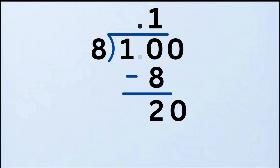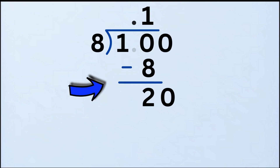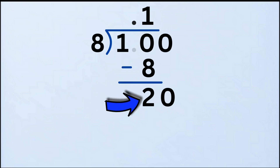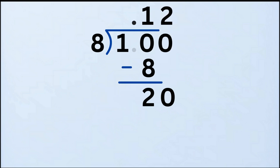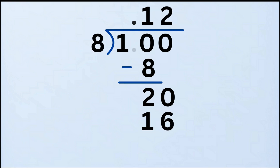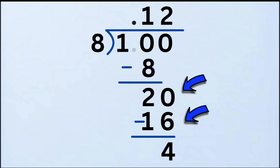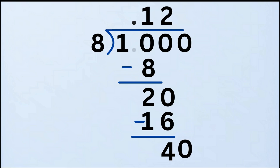Now ask again: how many times does 8 go into 20? The answer is 2 times. Write 2 in the quotient. Multiply: 8 times 2 equals 16. Subtract: 20 minus 16 equals 4. Still a remainder of 4 — keep going. Bring down another zero from the dividend and place it next to the 4, making 40.